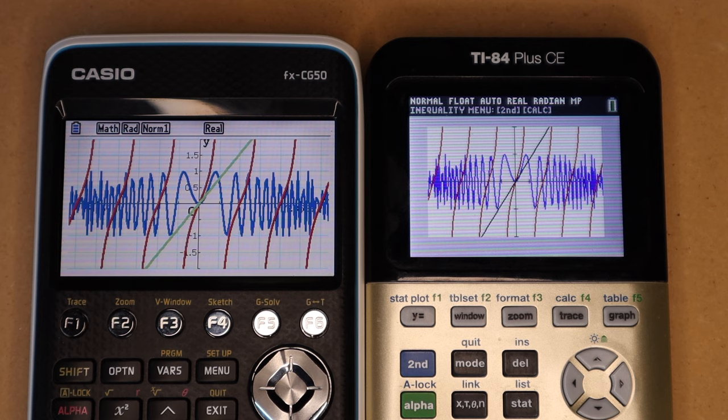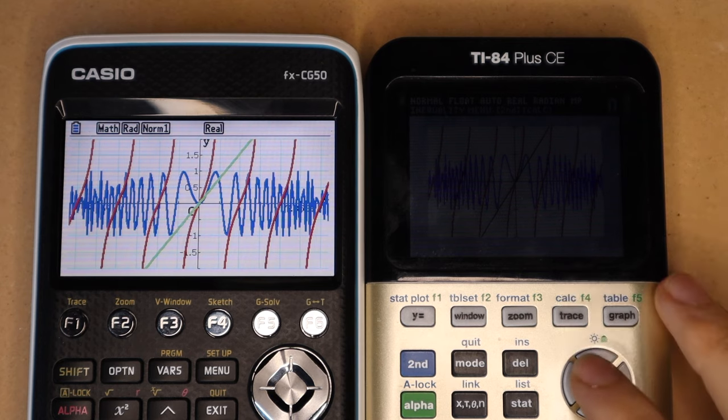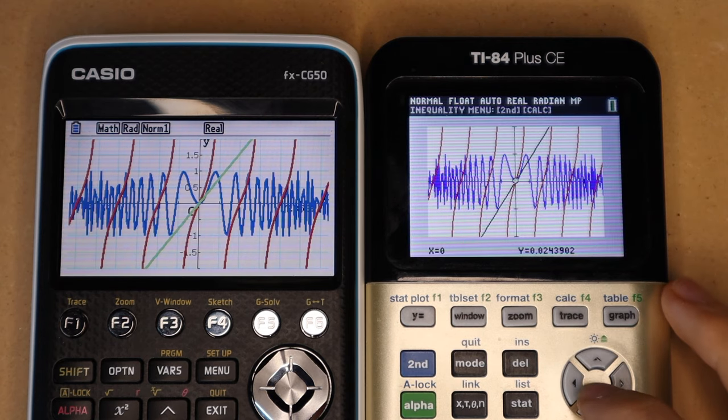And there you go. Finally, the TI-84 Plus CE finished. So that's a pretty significant time difference and quite a slow performance from the TI-84 Plus. It does get kind of annoying if you're graphing a lot of stuff to have to wait that long every time you want to see a picture of your function.